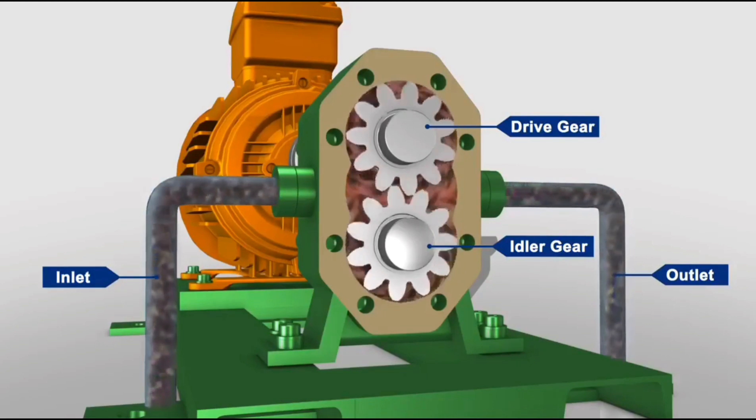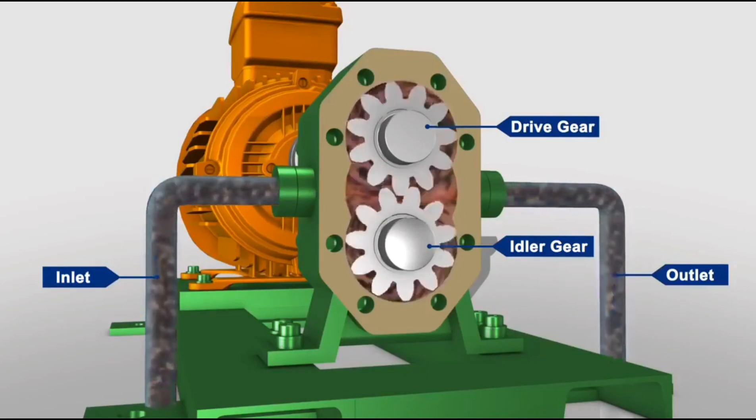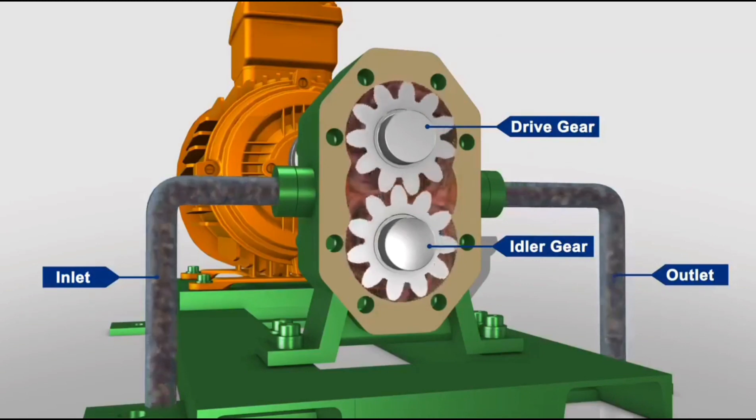The meshing of the gears on the discharge side of the pump forces the liquid out of the pump and into the discharge piping.